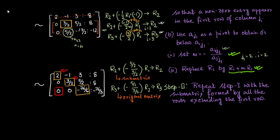When writing row operations, be clear about whether your indices refer to the submatrix or the original matrix — do not confuse these. I have written both versions to show the correspondence. If you have any doubt, ask in the comment section below. After these steps, we have the system in echelon form and can solve it.